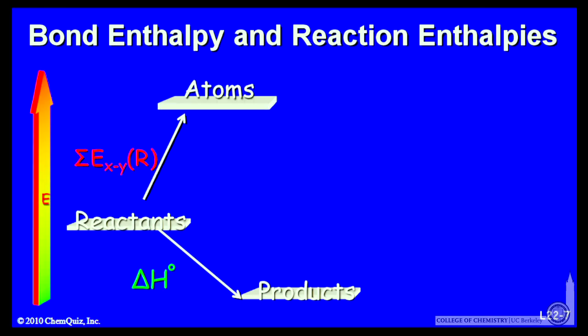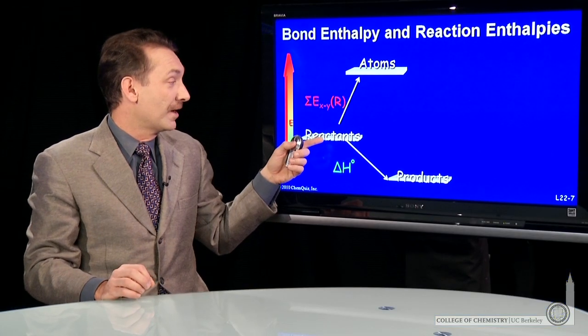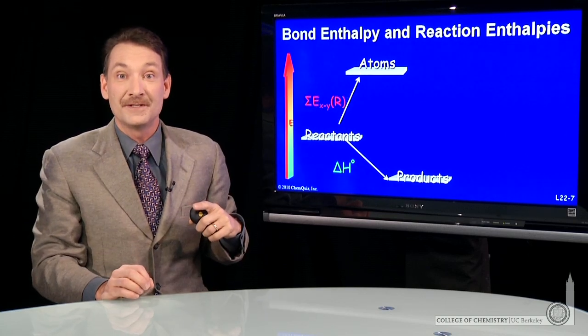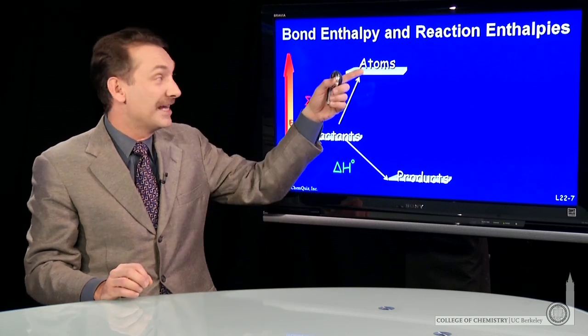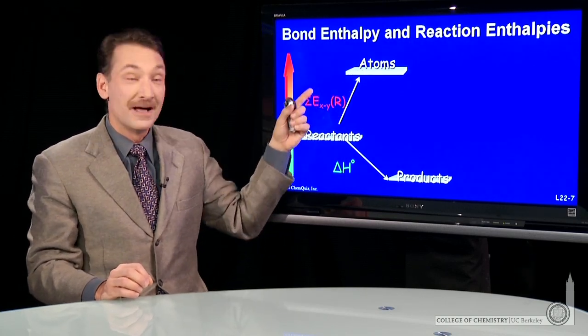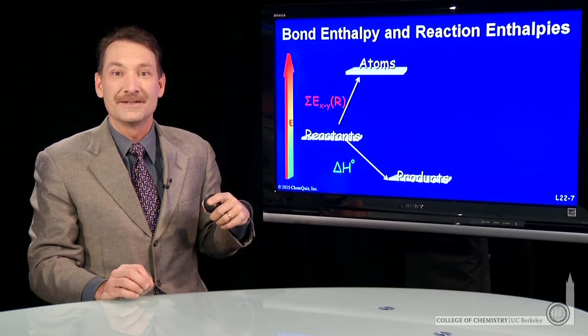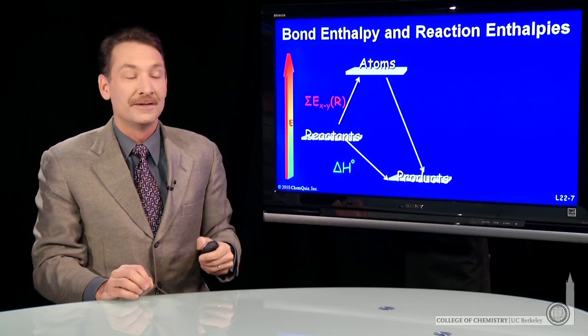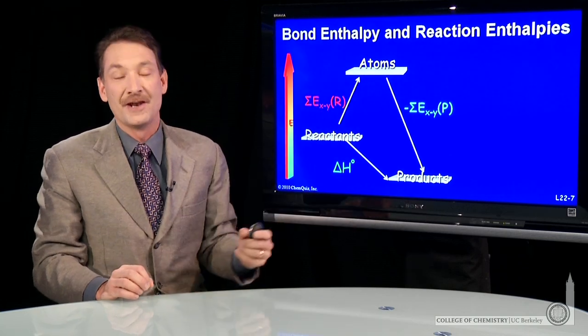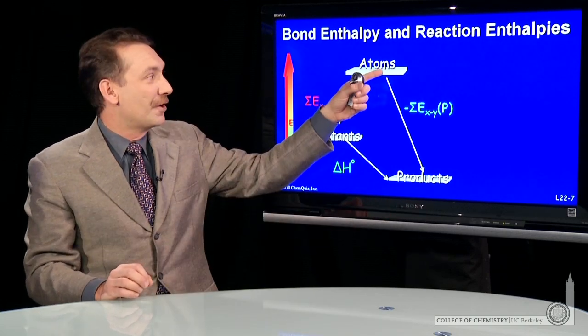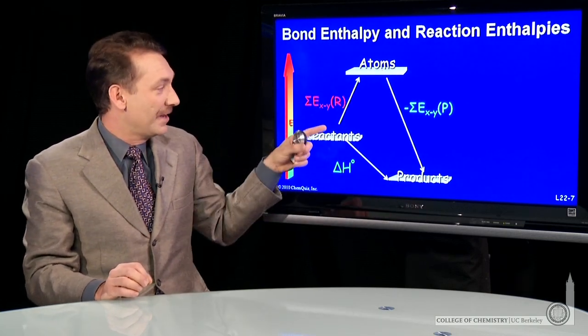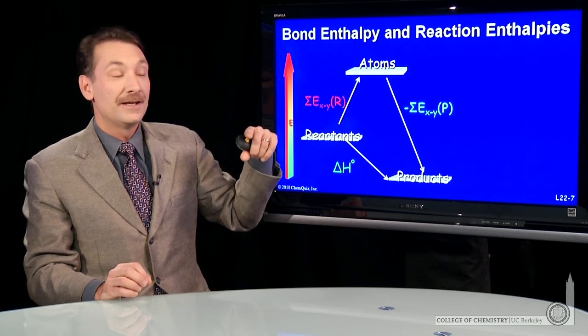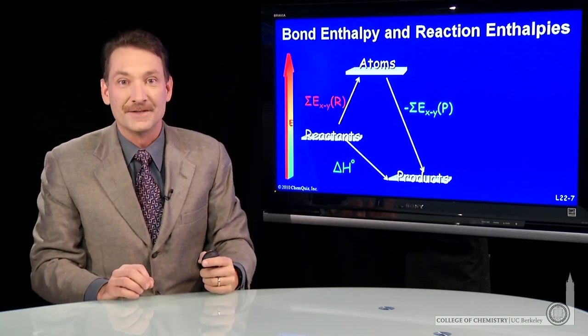If I do that, breaking the reactant bonds will always be endothermic. This is exclusively bond breaking. So if I'm going from reactants to their atoms, that's adding energy for all the bonds in the reactants. Now I can just form all the bonds in the products, and that will always release energy. So there'll always be an exothermic step, an endothermic step to break, and an exothermic step to make the bonds.